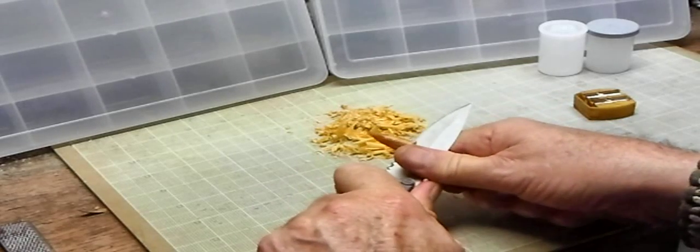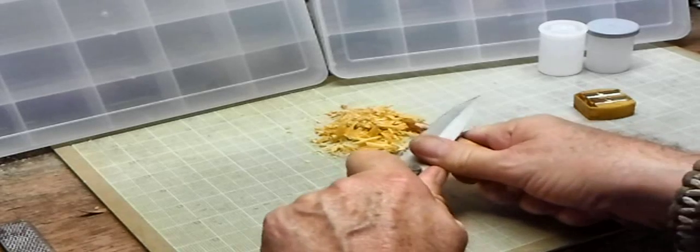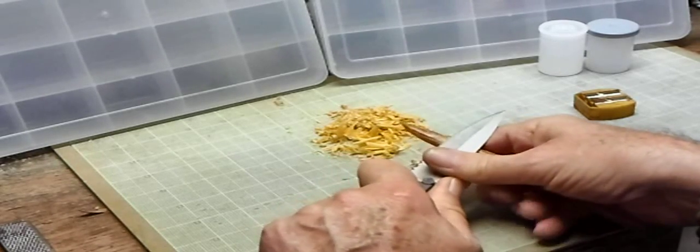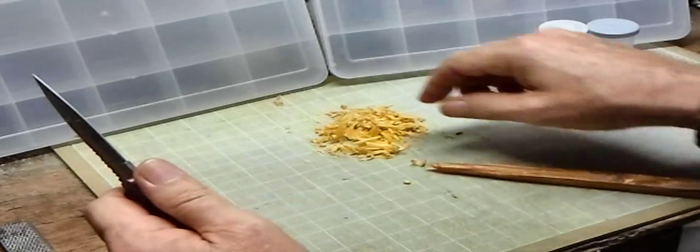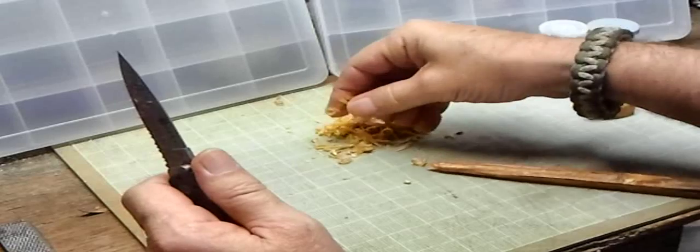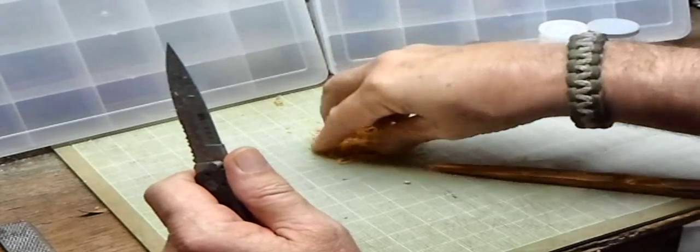Now you can also take and use a knife and just shave off small pieces. That's what I do, just little bitty pieces. Then I'll take and get a hold of them and just scrunch them between my fingers and pulverize them a little bit.